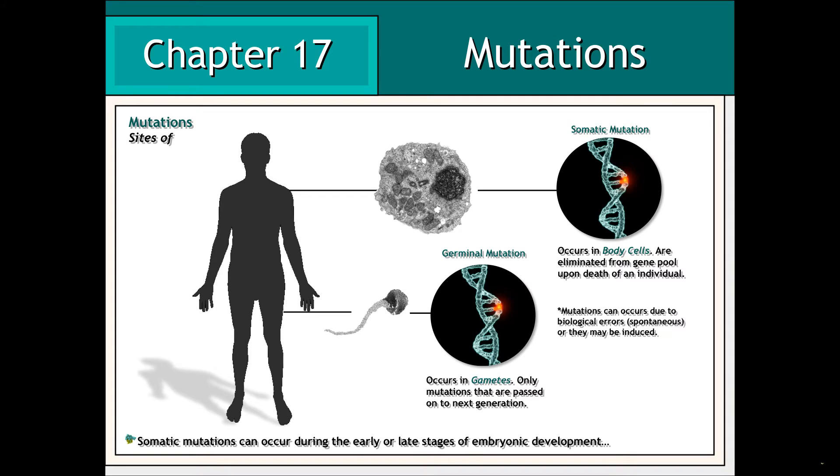The cause of mutations in either germ or somatic cells can be categorized as either being spontaneous or induced. Spontaneous mutations occur as a result of errors in biological processes, such as errors during DNA replication, whereas induced mutations are caused by environmental agents, such as radiation or the exposure of the DNA molecule to various chemicals.